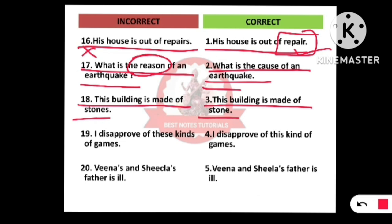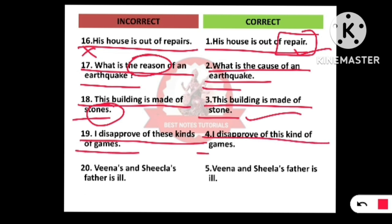Next: 'This building is made of stones.' It should be 'stone,' not 'stones.' The correct sentence is: 'This building is made of stone.' Also: 'I disprove of these kinds of games' is wrong — it should be 'I disapprove of this kind of games,' using 'kind,' not 'kinds.'